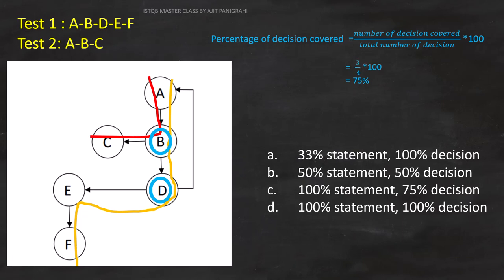And total number of conditions are 4. Percentage of decision coverage is number of decisions covered divided by total number of decisions multiplied by 100. The answer is 75%.